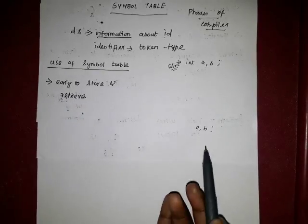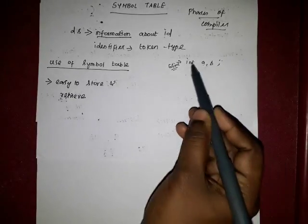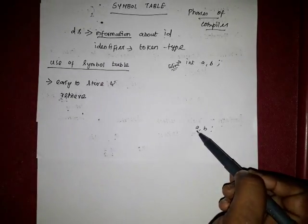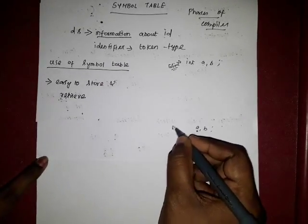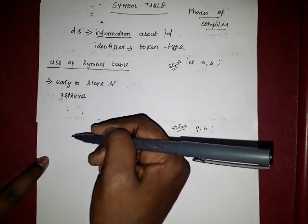If we store duplicate information, execution speed and running time will be reduced. Therefore, since we already have A and B information stored, we do not store it again. Instead, we can easily retrieve that particular A information — which was stored in the 5th line — directly from the data structure.